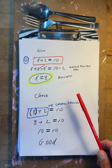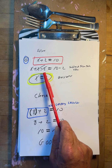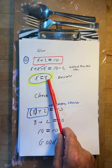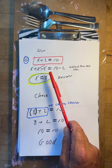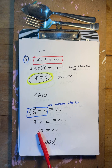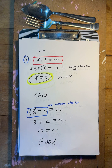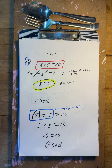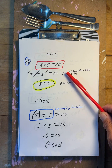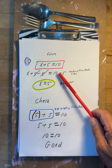x plus two equals ten. Minus two, minus two. So x equals eight. Does that work? Put it back in: eight plus two — take the parentheses off — eight plus two is ten. Yes, that works. You can always check your equation.